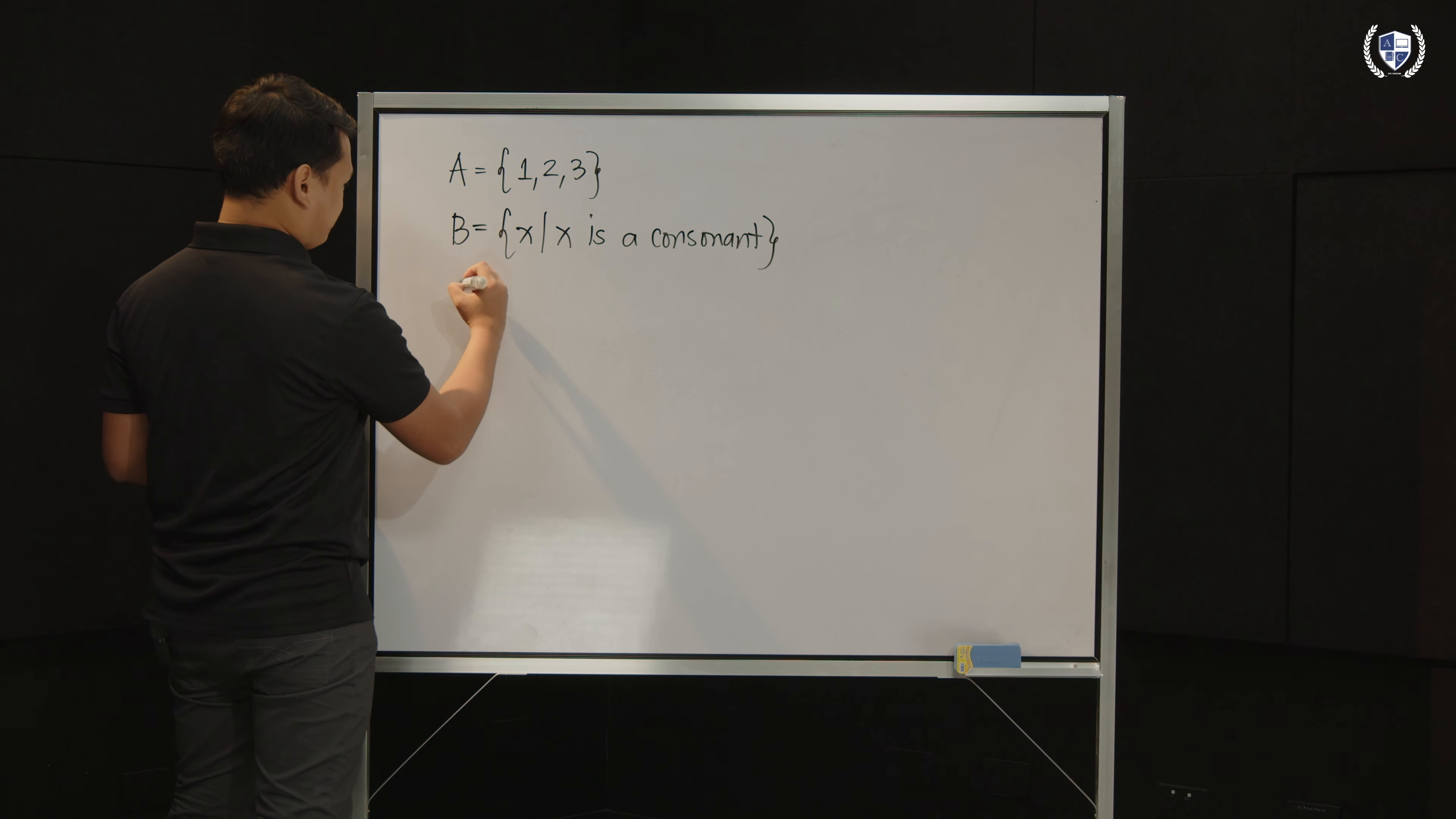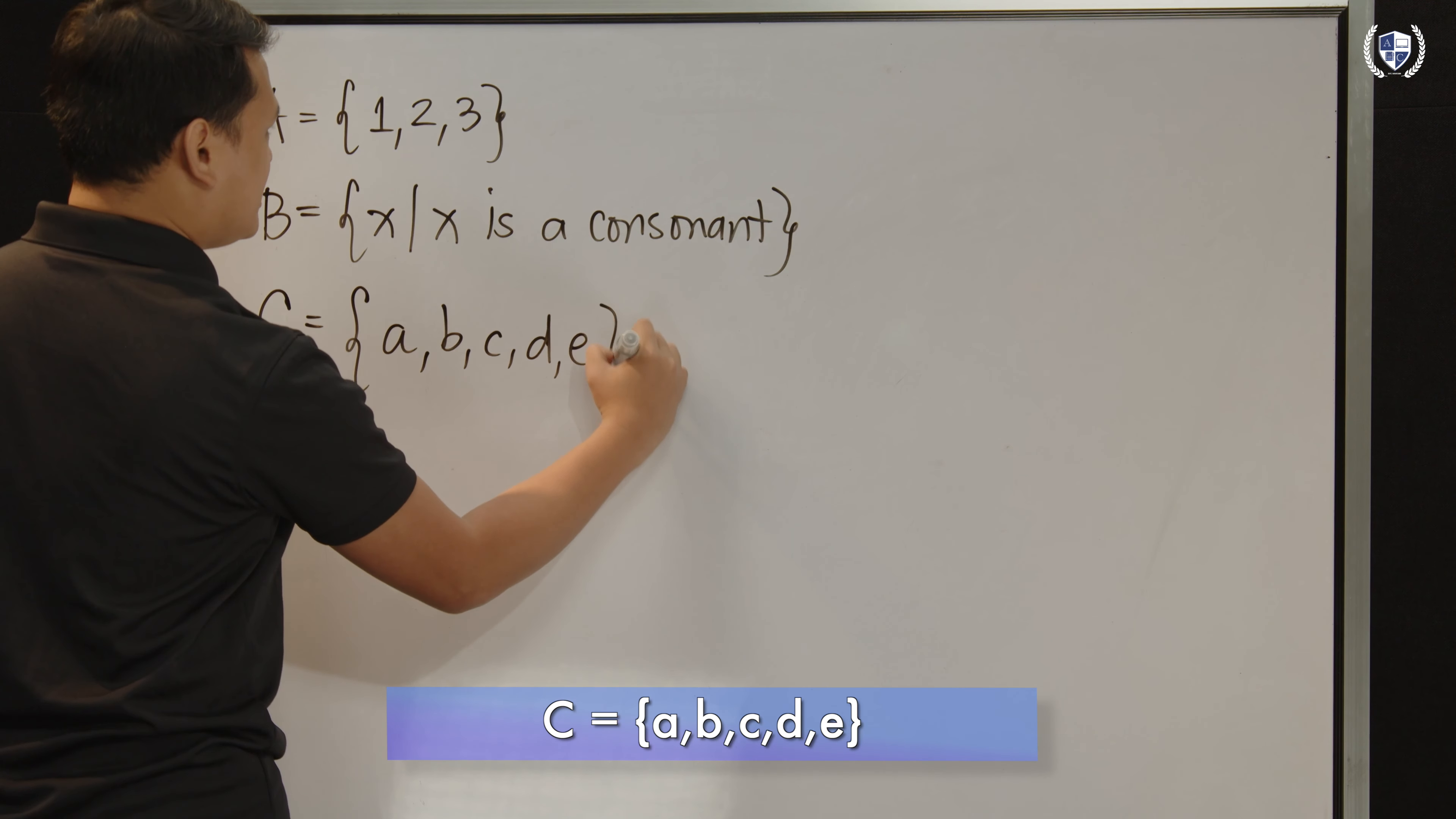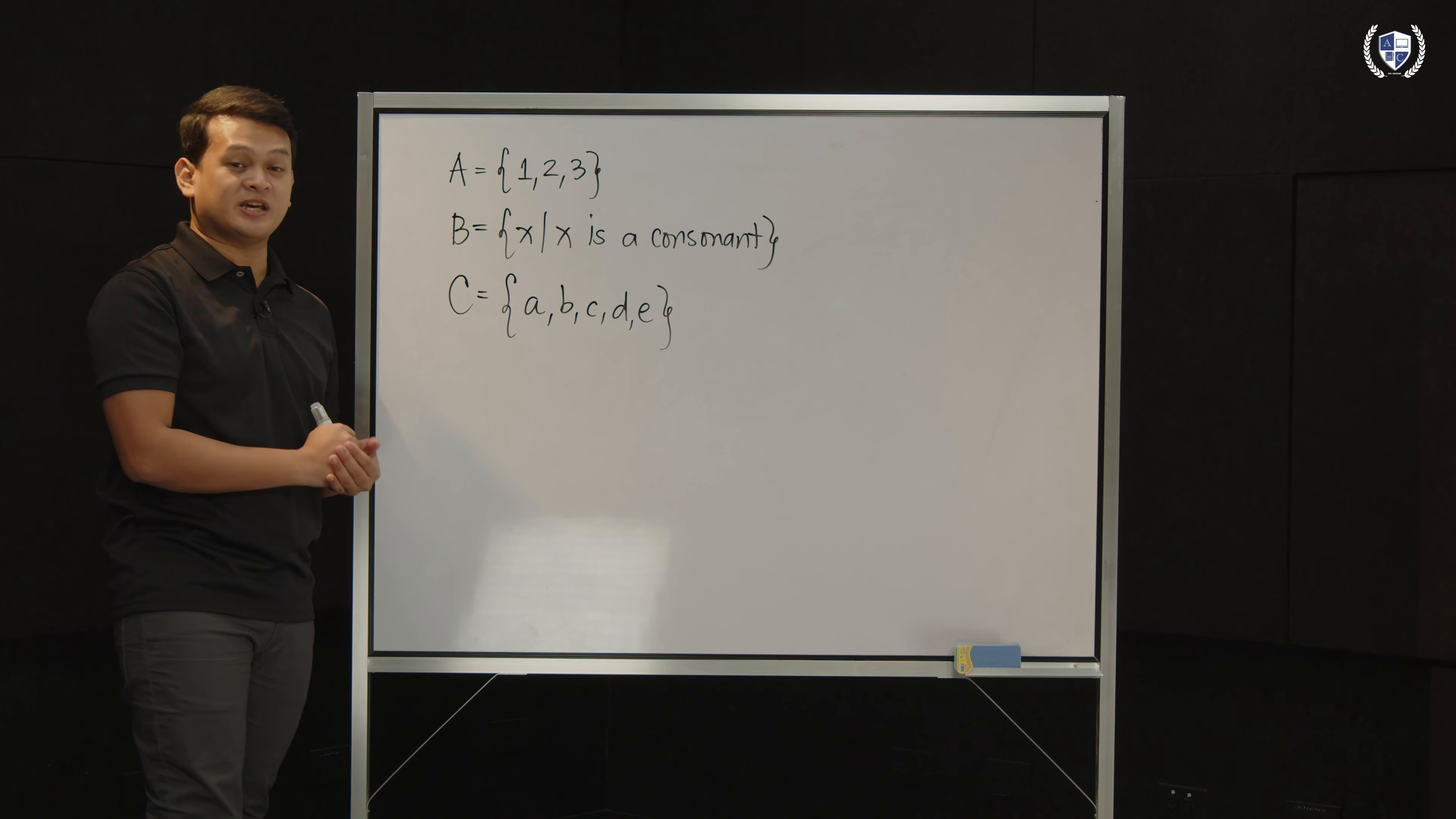Another one would be, let's say si set C ay elements containing A, B, C, D, and E. Is this set still finite? Oo naman, tumigil siya eh, di ba? At mapapansin mo, pwede pa rin natin, countable pa rin, pwede natin bilangin yung elements ng ating set C. So, for these three examples of sets, all of them are finite sets.